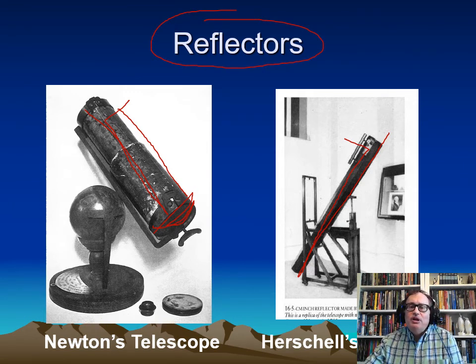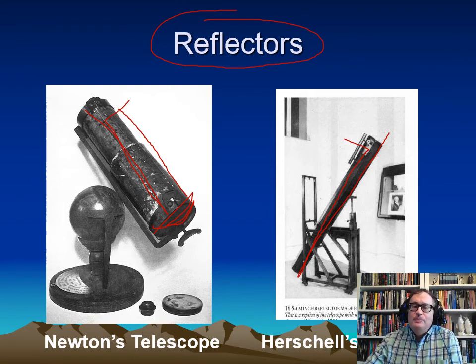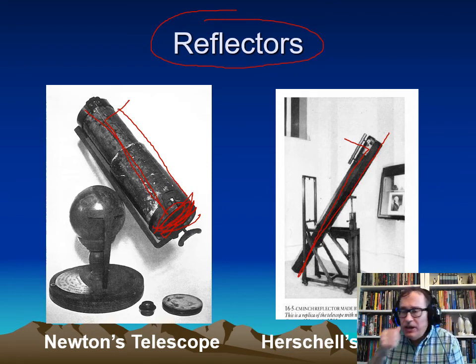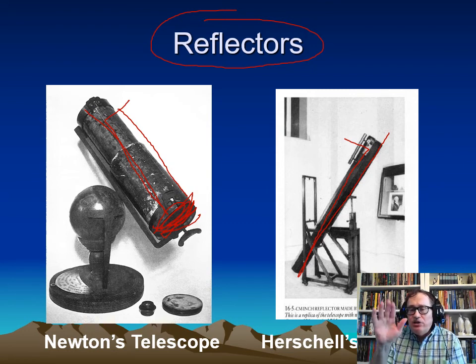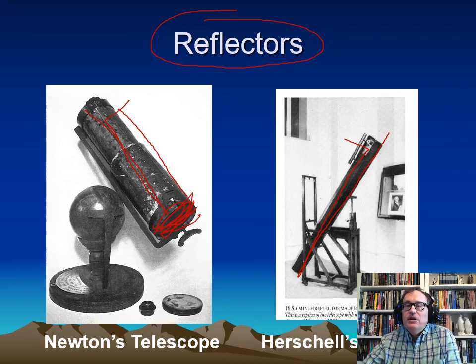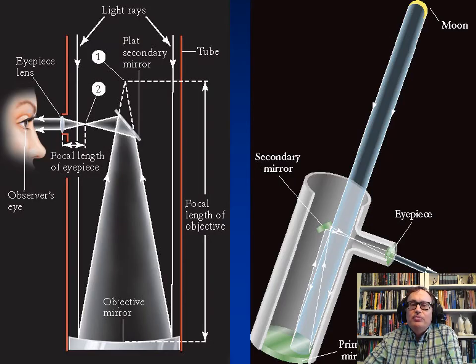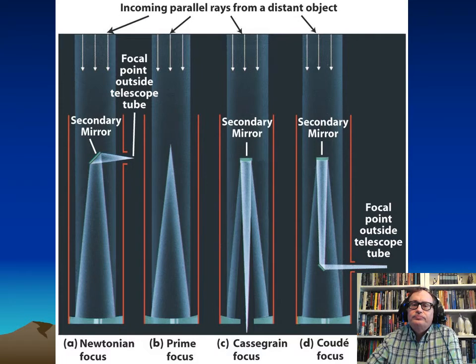A reflecting telescope uses mirrors to focus the light instead of lenses. You can actually build it a lot larger because you can support the mirror all the way around here. And the other thing is, with the lens, both the front and the back of the lens have to be exact. With the reflecting telescope, that's not necessarily the case—the back could have imperfections in it and the front would have to be exact. And so that's the idea of a reflecting telescope. And so the light would come in, hit the mirror, come up and then go out the side of the telescope.